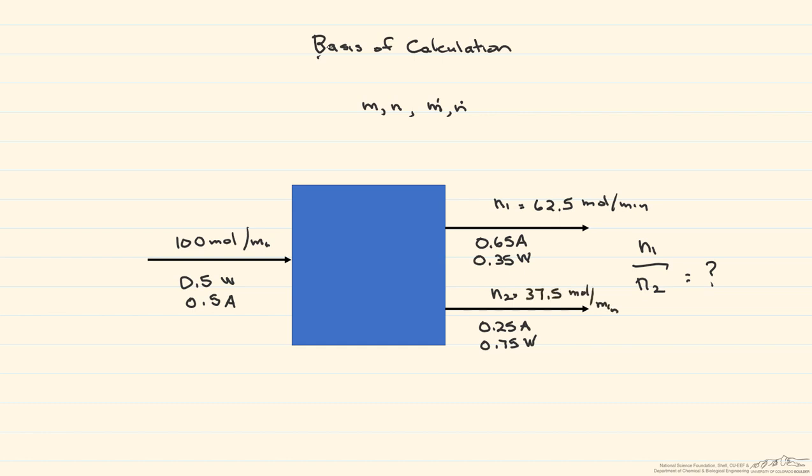What if instead we change this to 50 moles per minute? Now the flow rates themselves are going to change. As you can imagine, our new N1 and our new N2 are gonna be half of what they were when it was 100 moles per minute, but this ratio is still gonna stay the same.